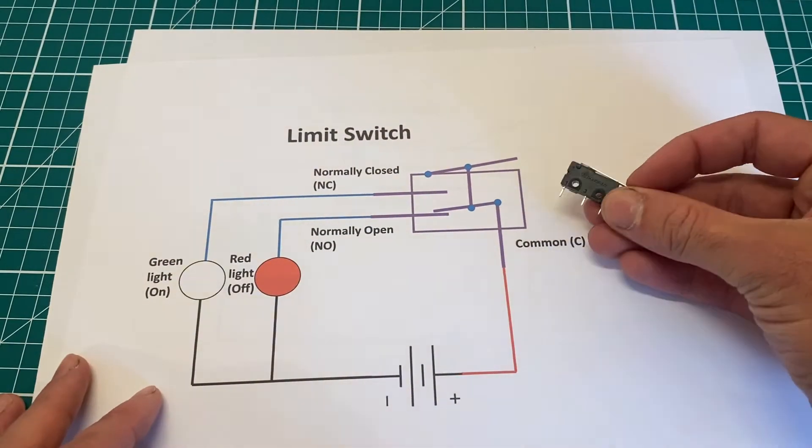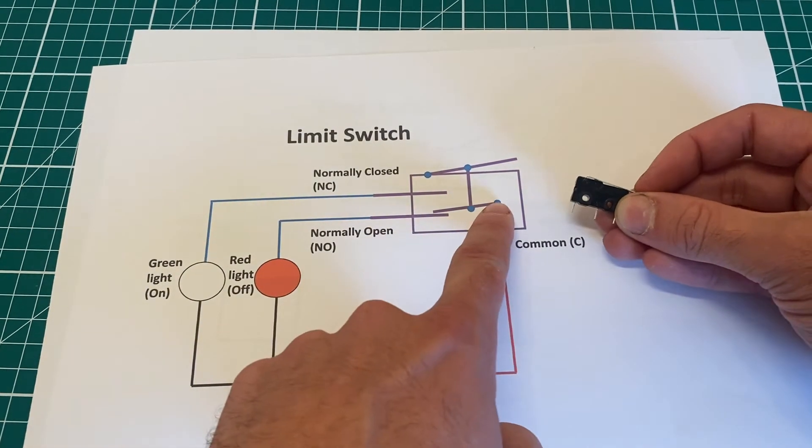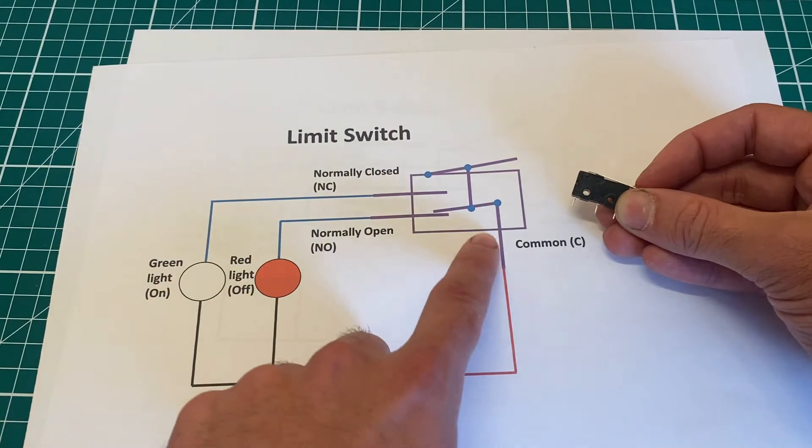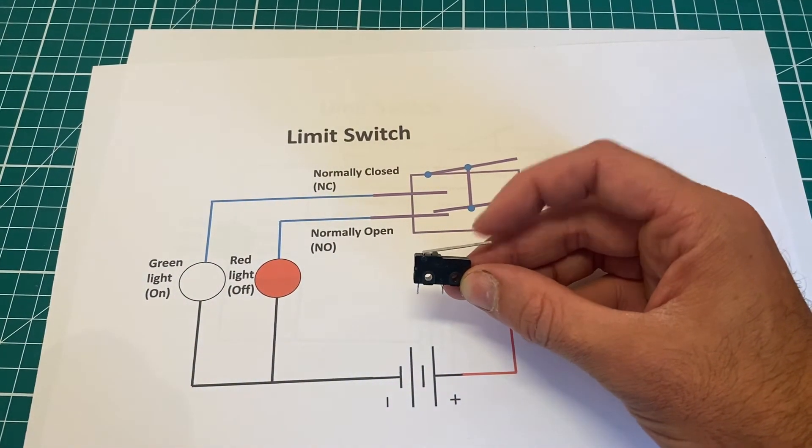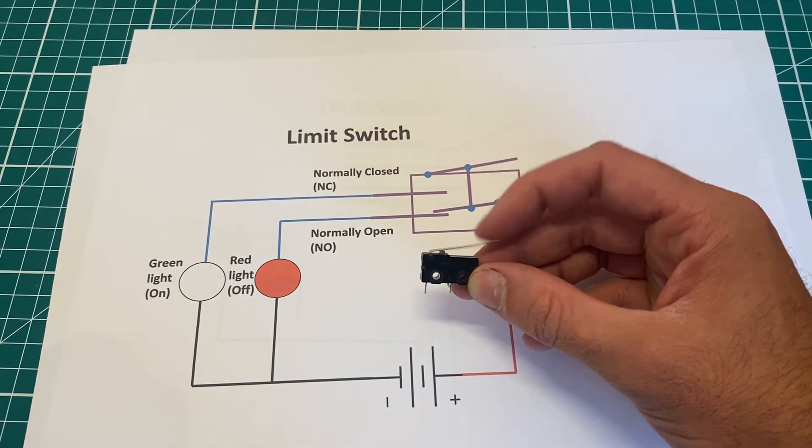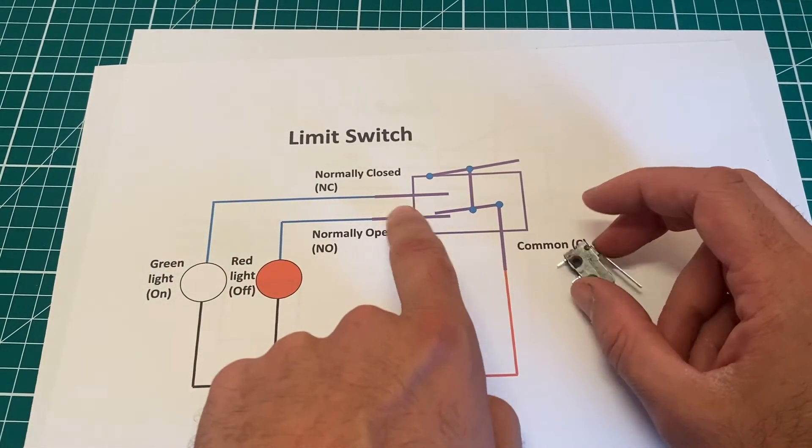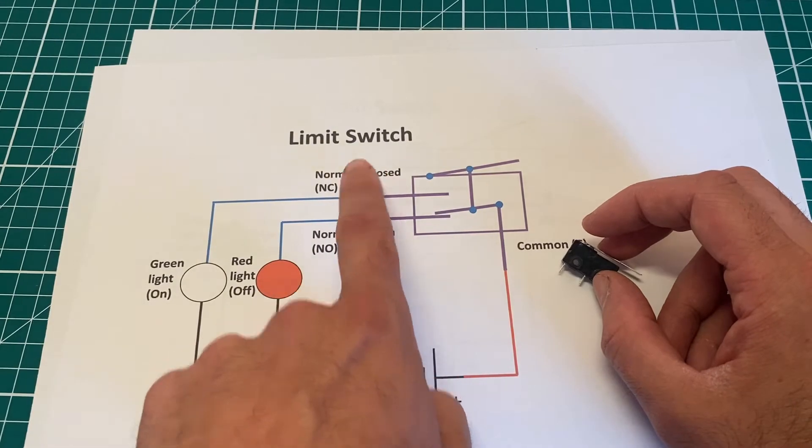Now if we were to press the switch down, what would happen? So if we were to press the switch, our common now would be joining up to our normally open, and our red light would go on. Okay, so that's basically how our limit switch works. It has two different positions, and depending on the position it is in, the different pin it comes out—normally closed or normally open.